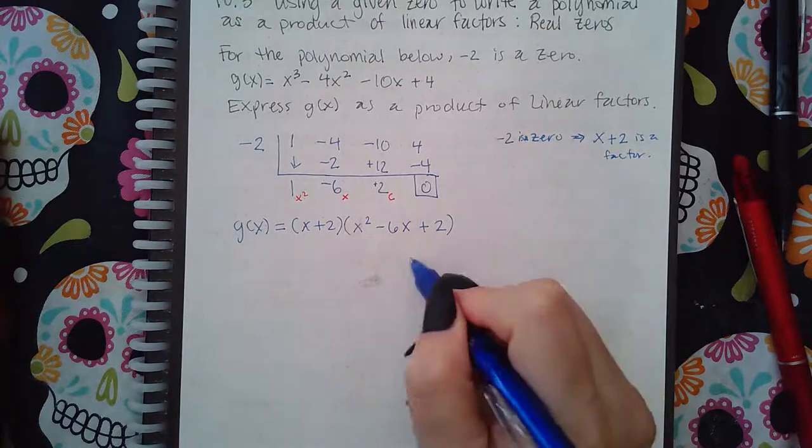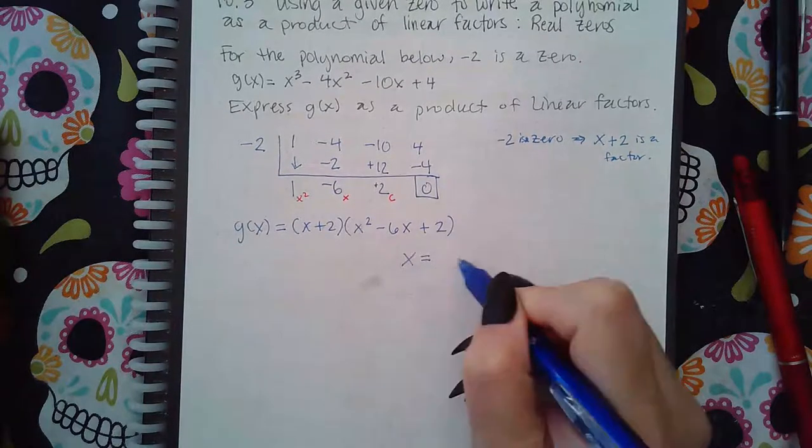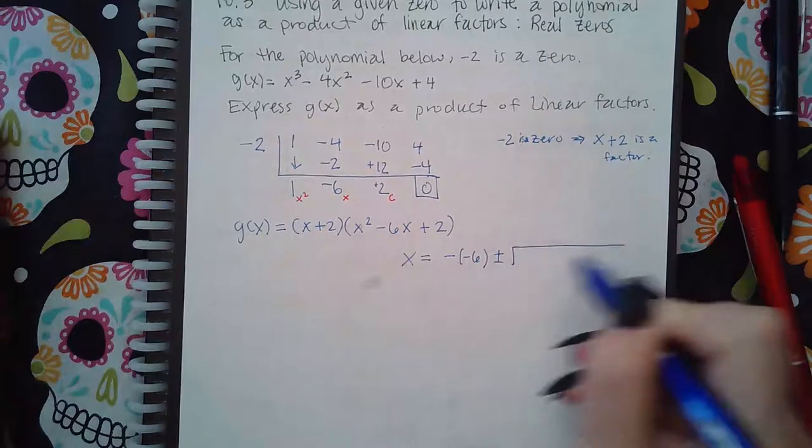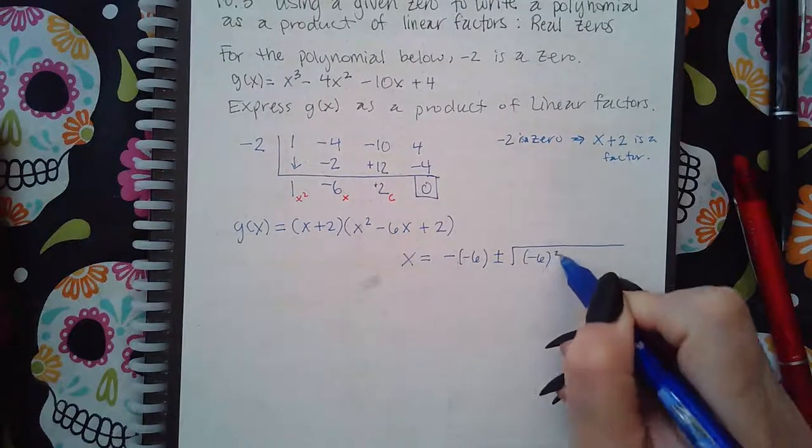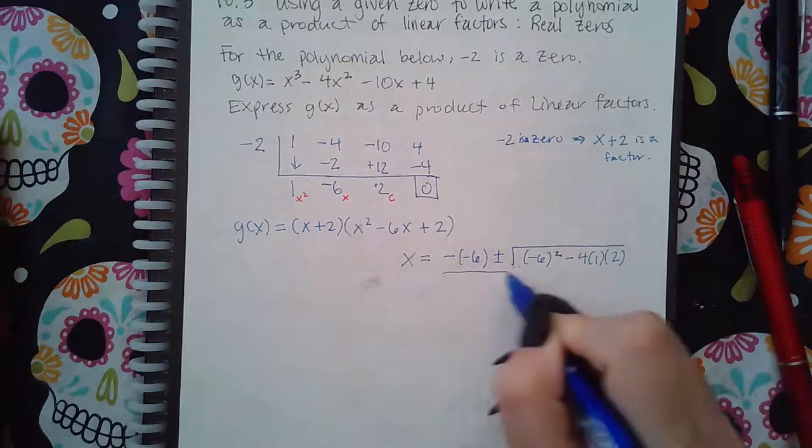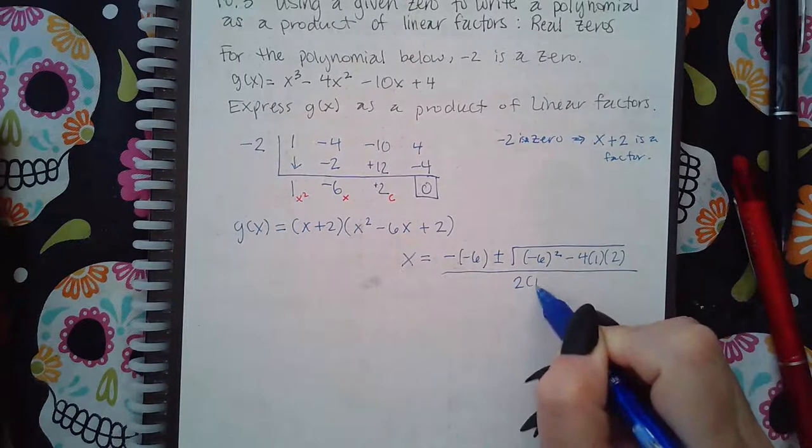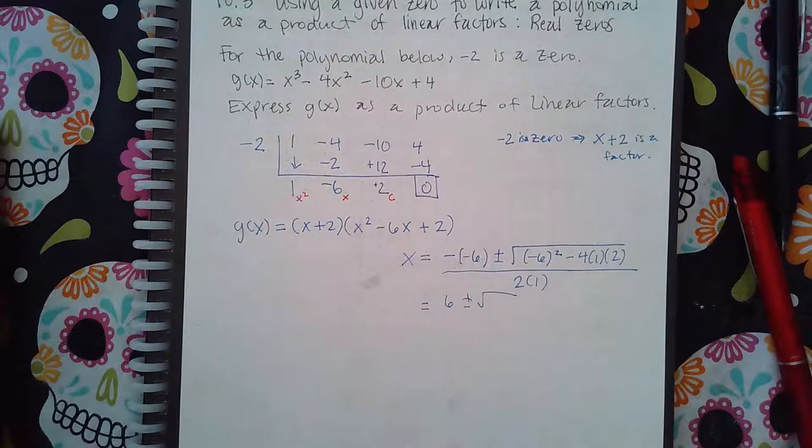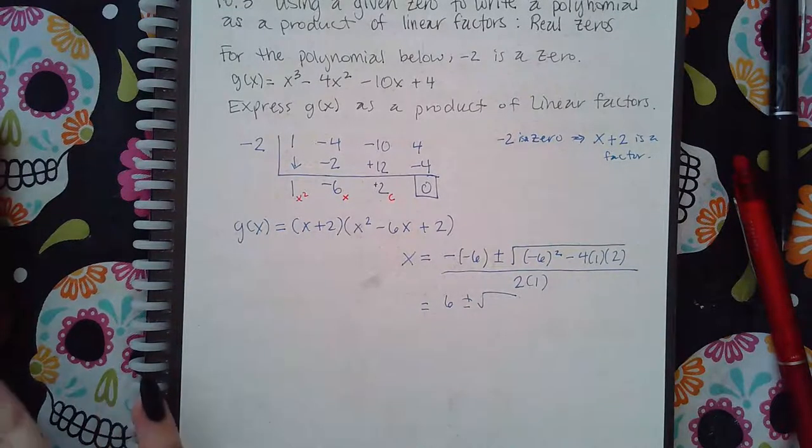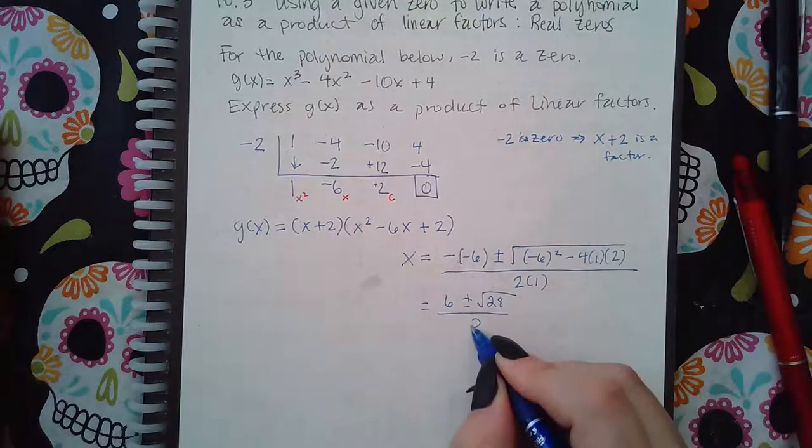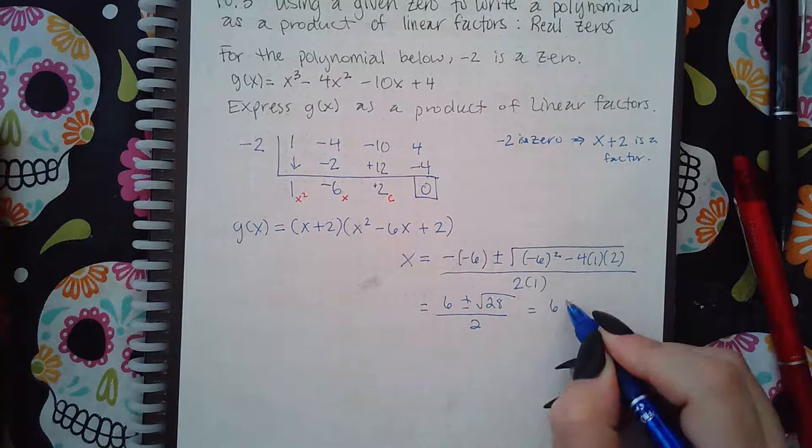So for the quadratic formula, I get that x equals negative b plus or minus the square root of b squared minus 4 times a times c all over 2a. So that gives me 6 plus or minus the square root of 28 over 2.